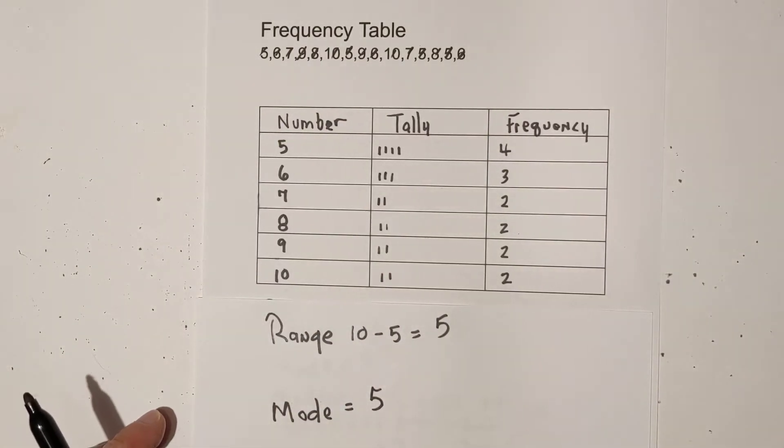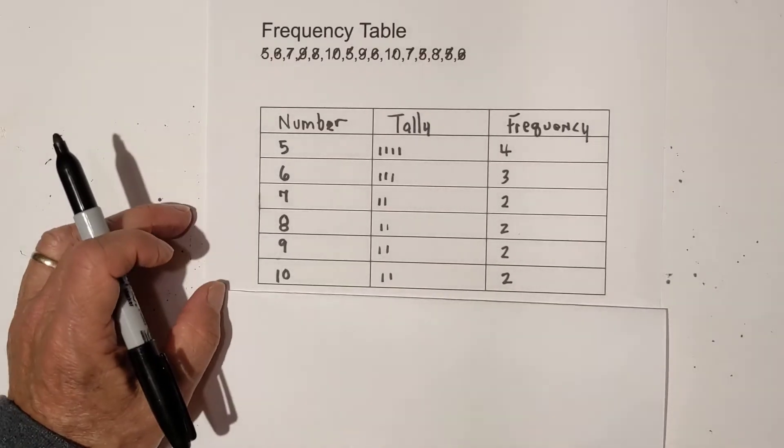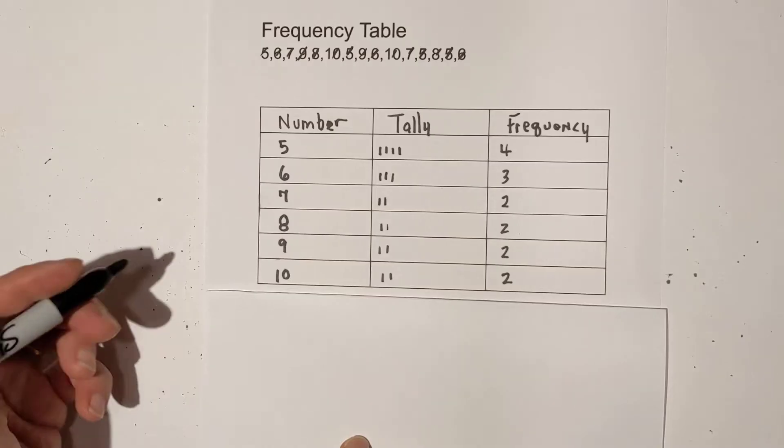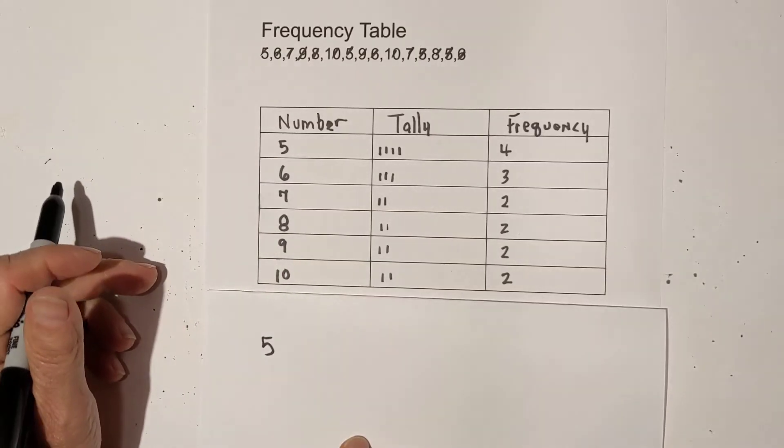Now let's move on to the median. Now for the median, I think the easiest way of using a frequency table is just to rewrite your numbers from smallest to larger and how many each appear.